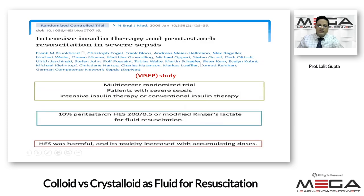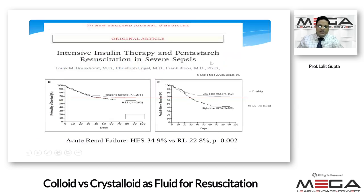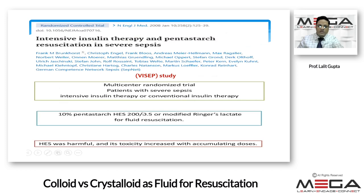Then another study came — the VISEP trial on intensive resuscitation therapy and pentastarch resuscitation in severe sepsis. This was a very important study because in 2008 it showed that acute renal failure was more common with HES than Ringer's lactate, and it showed that dose matters. If HES was given in a dose less than 22 ml/kg, survival was better than with a dose of 48 ml/kg on average. The VISEP study concluded that HES was harmful and toxicity increased with accumulating dose.